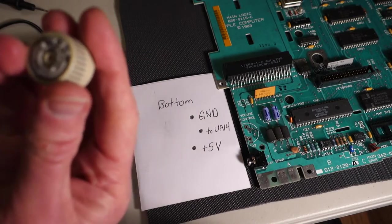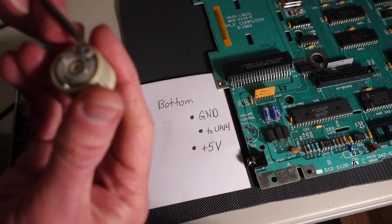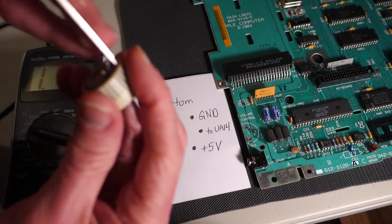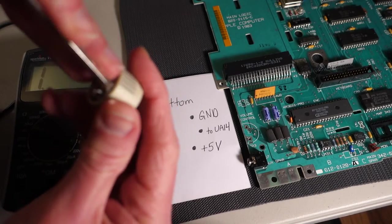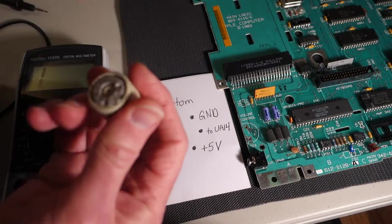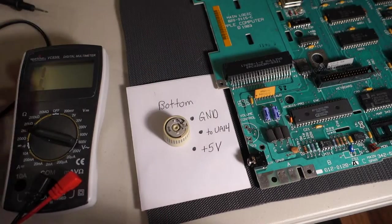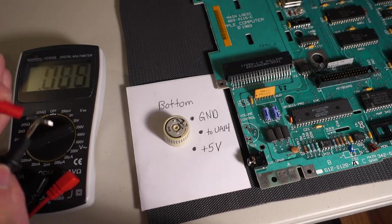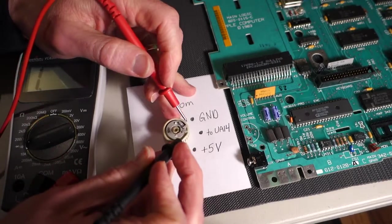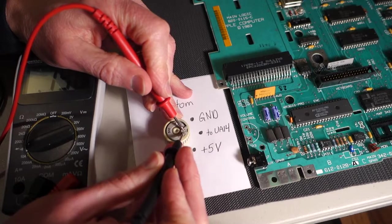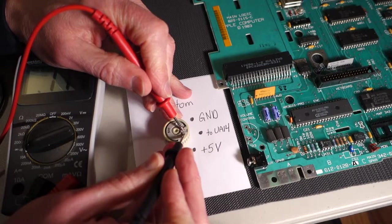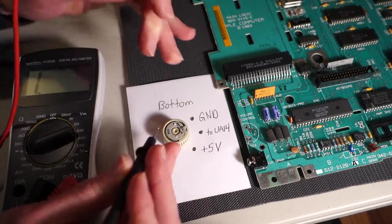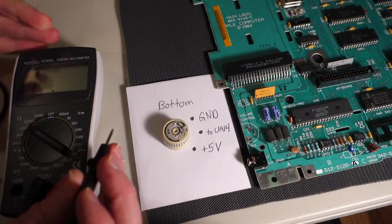Now we can spin the dial around carefully. Okay this should be all the way on and let's put it back on continuity and now we touch the plus five volts and the middle pin so those are connected. So installing the volume control back into the Apple IIc is just a simple matter of reinserting the pins into the board and soldering it.